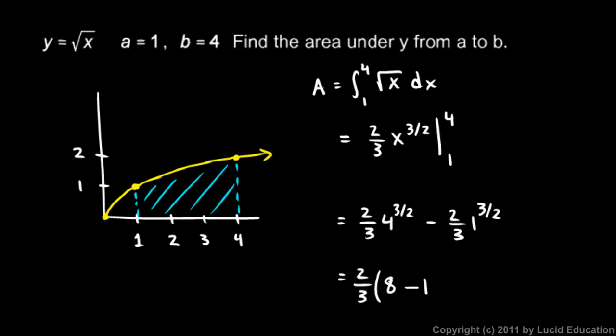So it's 8 minus 1. So it's 2 thirds times 7, or 14 thirds. And that's our answer. And that's the exact area here under the graph. It's not an approximation. That is exactly correct.